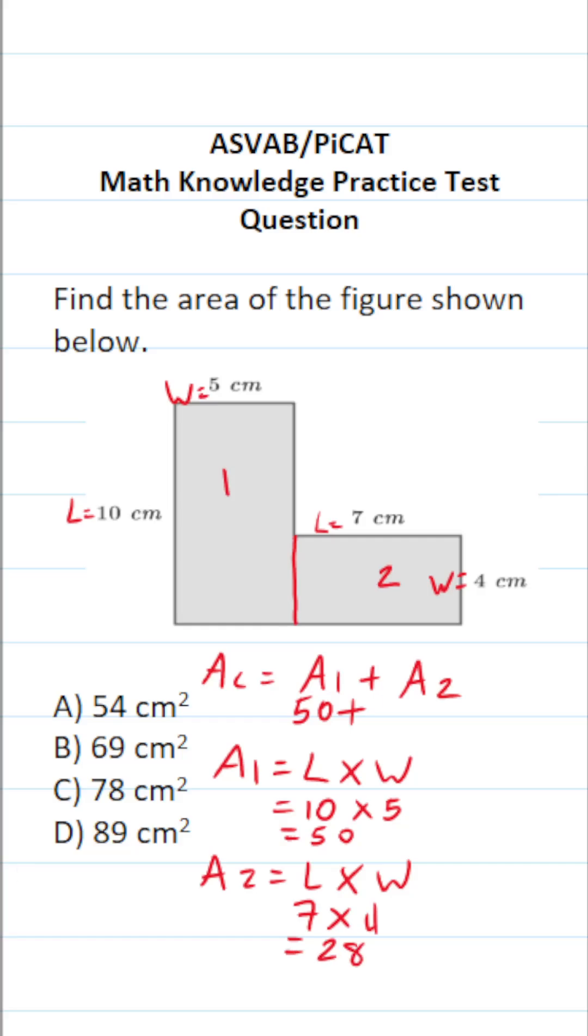So the area of this second rectangle is 28 square centimeters. To find the area of this composite figure, we take the area of rectangle 1 and add that to the area of rectangle 2. This is 50 plus 28 are 78 centimeters squared.